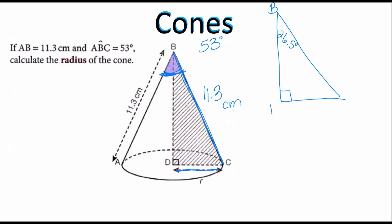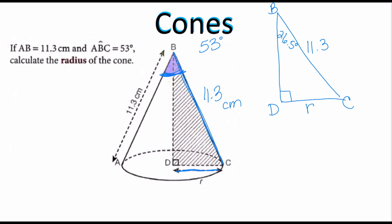Then I have D, which is my 90-degree angle, and C. BC is 11.3, so my job is to figure out the radius, which is DC. Because this is a right triangle, one of the things that I can use are the trigonometric ratios — SOH CAH TOA: sine, cosine, tangent — and that is exactly what we're going to work with here.